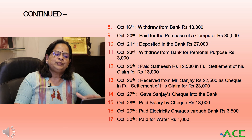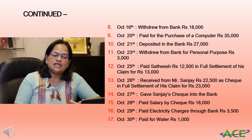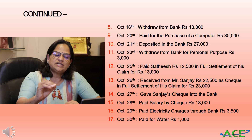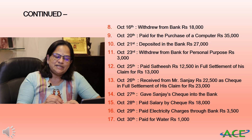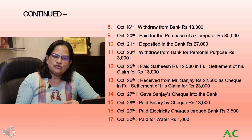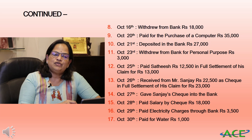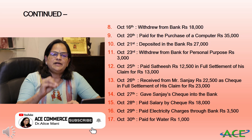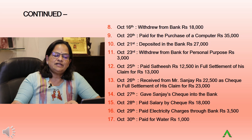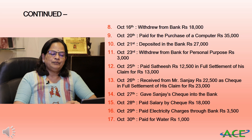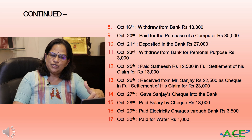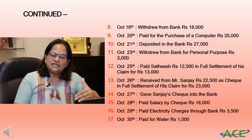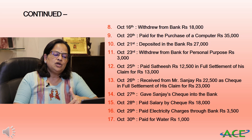October 21st: deposited in bank rupees 27,000. October 23rd: withdrew from bank for personal purpose rupees 3,000. October 25th: paid Satish rupees 12,500 in full settlement of his claim for rupees 13,000 — discount is rupees 500. October 26th: receipt from Mr. Sanjay rupees 22,500 by check in full settlement of his claim for rupees 23,000 — discount is rupees 500. October 27th: deposited Sanjay's check into bank.